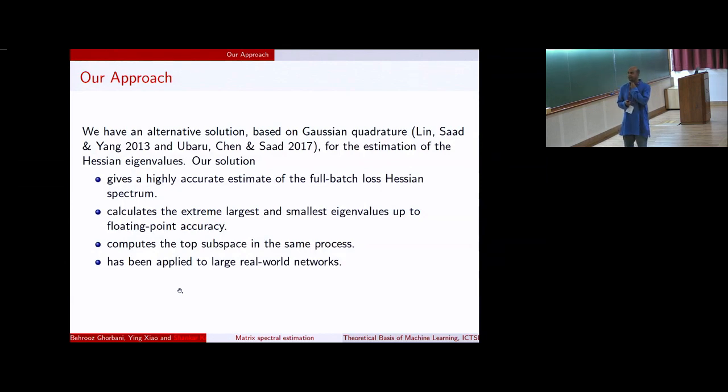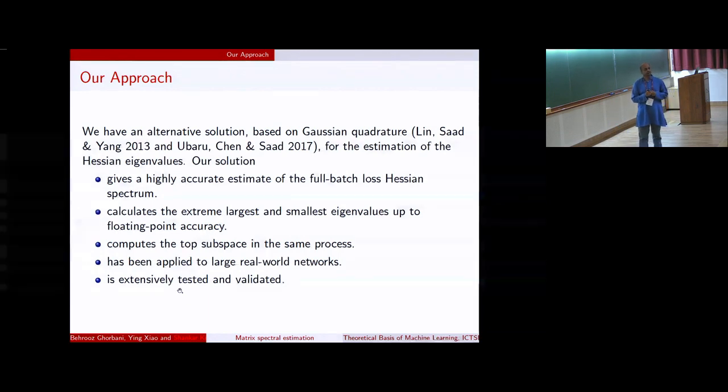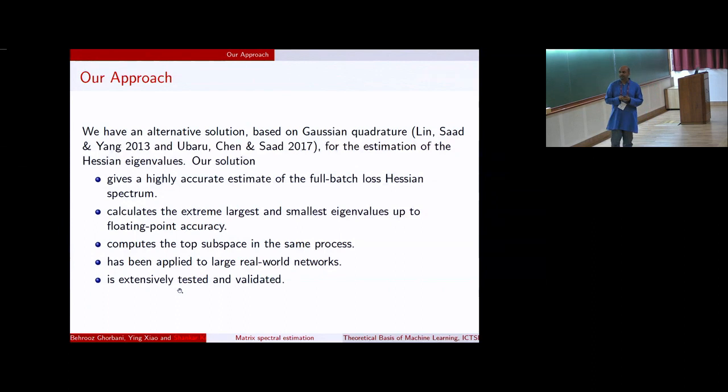As part of this you get for free the extreme largest and smallest eigenvalues up to floating point accuracy. And in this turn you can also compute moments of your distribution. It can compute the top subspace in the same process. And for the first time, as far as we know, we have applied it to actual real networks. And a significant portion of the effort was spent by my intern developing the software to efficiently implement this in a machine learning system like TensorFlow. Within a few months we will open source this so that anybody else can use it.